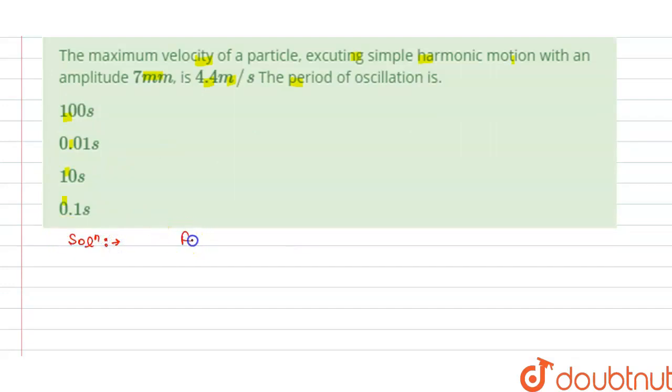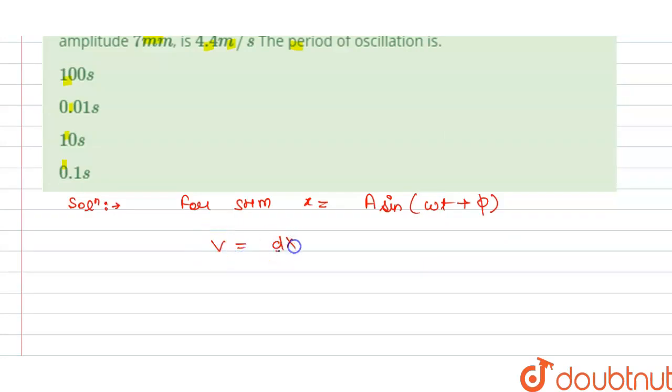So the solution of this question is: we know that for simple harmonic motion we have x equals to A sin(ωt + φ), that is amplitude sine omega t plus phi, that is the phase difference. And we have the velocity v equals dx/dt, and this is Aω cos(ωt + φ).